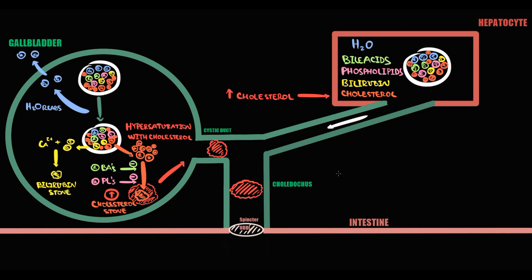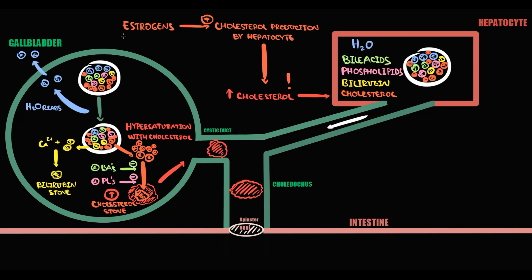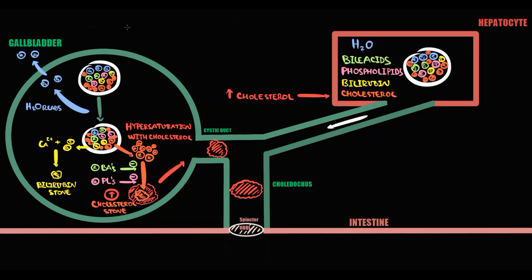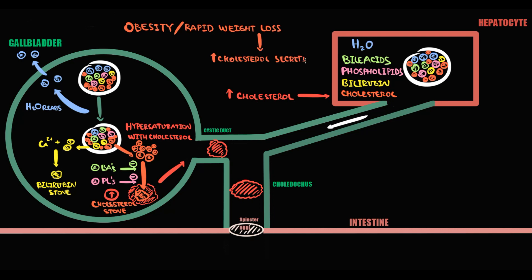The first risk factor that increases the amount of cholesterol molecules in the bile is high levels of estrogens. Estrogens markedly increase the production of cholesterol by hepatocytes. For example, females have higher estrogen levels than males, and because of this they have a higher amount of cholesterol in the bile, making them more predisposed to gallstone formation. Also, females who take contraceptive pills are at risk because contraceptive pills contain high amounts of estrogens. The next factor is obesity and rapid weight loss. Obese individuals or individuals after rapid weight loss secrete significantly higher amounts of cholesterol into the bile, so they are at risk of cholesterol gallstones.